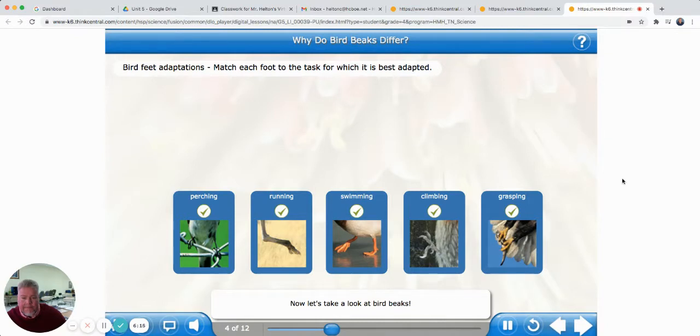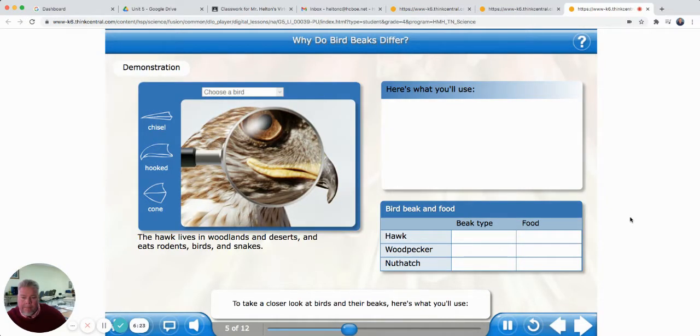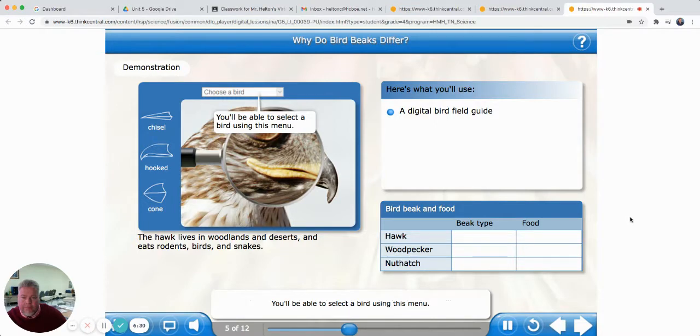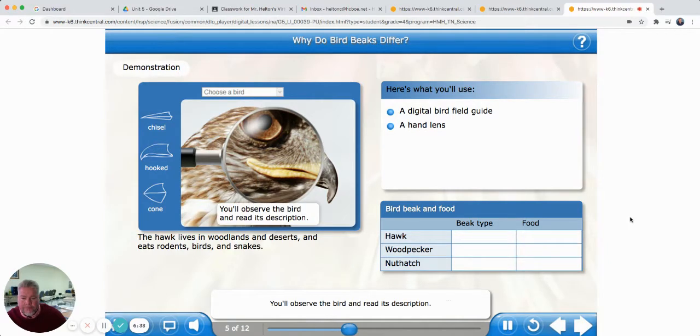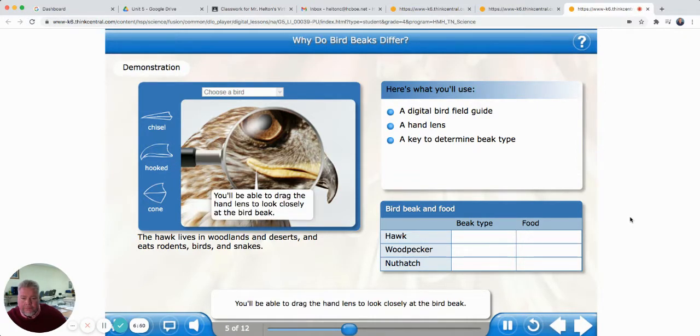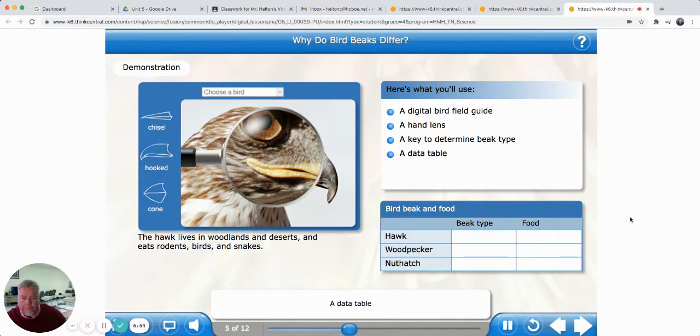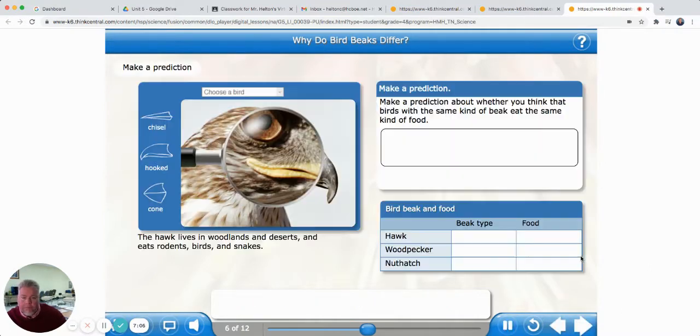Now, let's take a look at bird beaks. To take a closer look at birds and their beaks, here's what you'll use. A digital bird field guide. You'll be able to select a bird using this menu. A hand lens. You'll be able to drag the hand lens to look closely at the bird beak. You'll observe the bird and read its description. A key to determine beak type. You will use this key to determine each bird's beak type. A data table. You'll record in the table each bird's beak type and the food it eats.